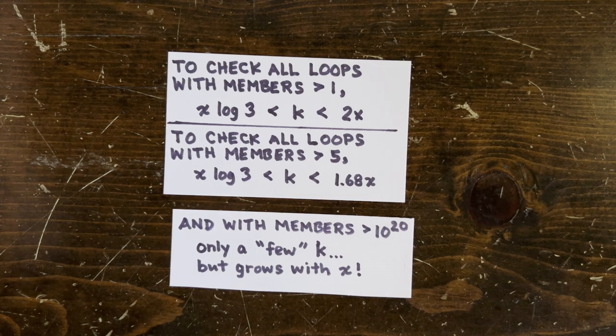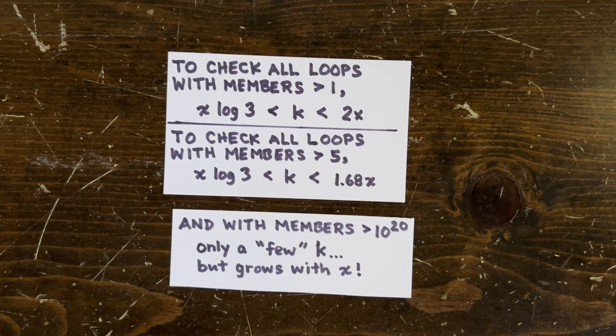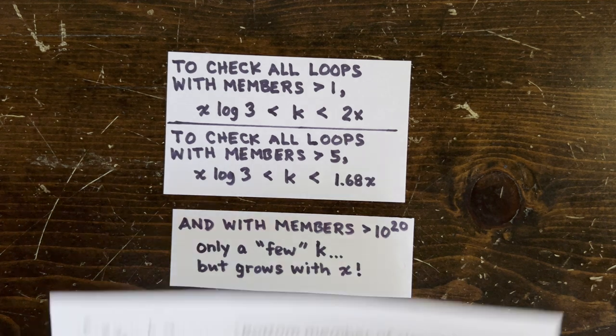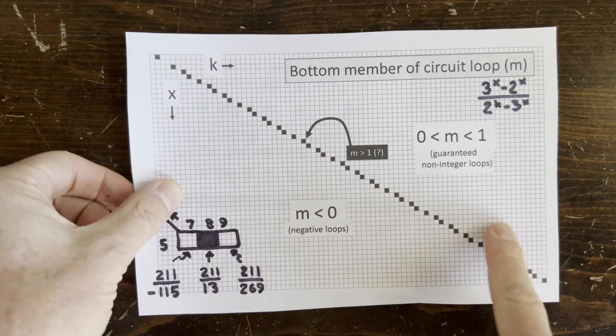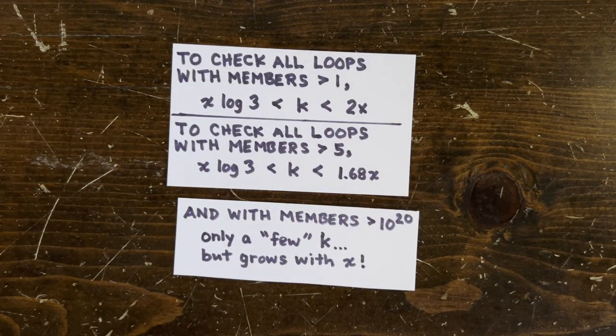But tiny is a relative term, because once we hit very large x, the number of k values we need to check is going to grow linearly with x. It's not like we can limit ourselves to one value of k per x, like in the circuit case, or even 100 values or any finite number.